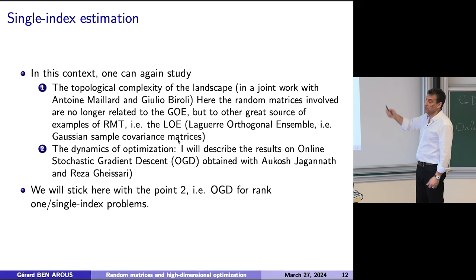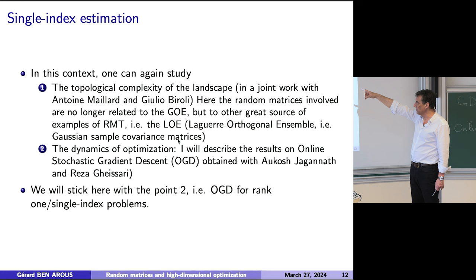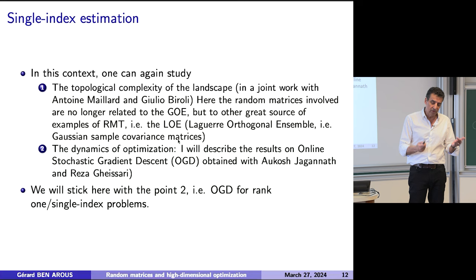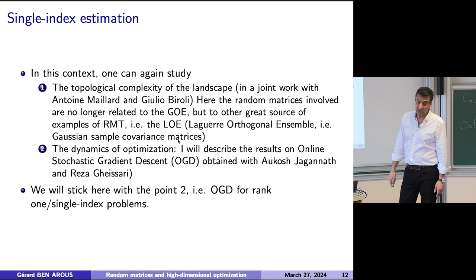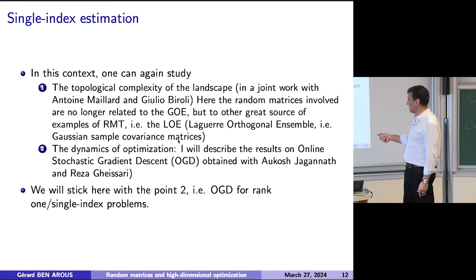The context: we can study either the topological complexity of the landscape or the dynamics of optimization. I will stick to the dynamics. The complexity for this type of thing I will not mention, but there is a joint work two or three years old with Antoine Maillard and Giulio Biroli from École Normale where we do that. You use the Kac-Rice formula, you have a complicated random matrix much harder than in the tensor PCA case in general, and you find again that the model is exponentially complex, and when the signal is strong enough, it becomes less complex. But I don't want to spend time on that because I want to go to dynamics.